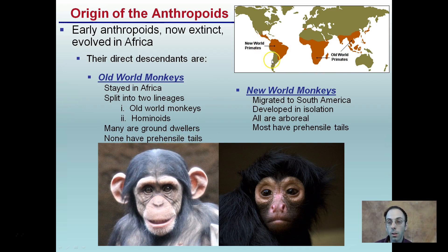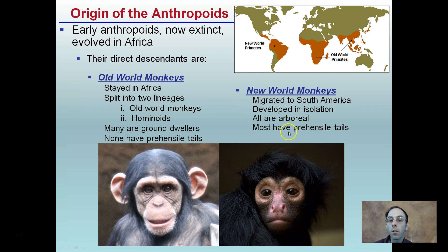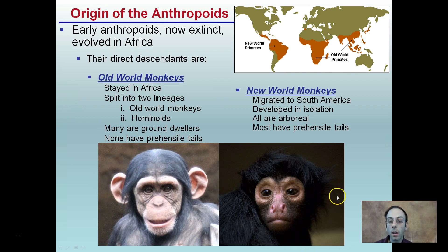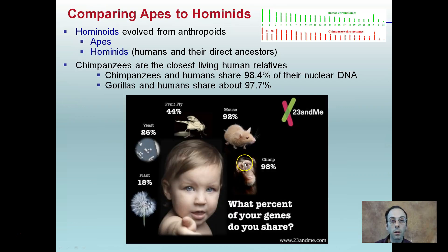New World monkeys, found in South America and Central America, are where the other lineage migrated to. They developed in isolation and are arboreal. They also have prehensile tails. This is an example of what an Old World monkey looks like, and this is an example of a New World monkey.